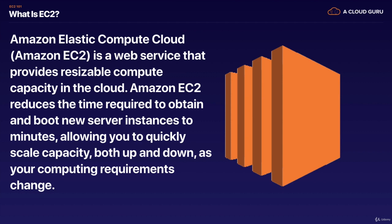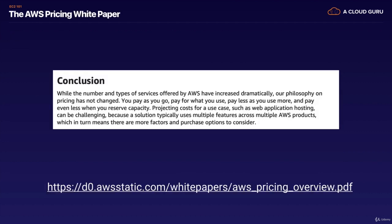So how is EC2 priced? If you've done the Certified Cloud Practitioner course, you'll remember we had a pricing section where we looked at a white paper called AWS Pricing Overview. You don't actually need to read this white paper for the Certified Solutions Architect Associate, but it has a principle that applies across all of AWS: you pay as you go, you pay for what you use, you pay less as you use more, and you pay even less when you reserve capacity.